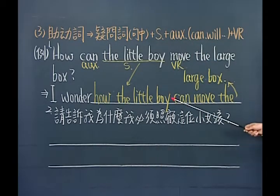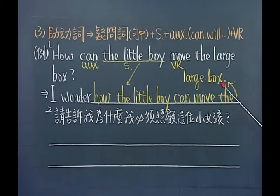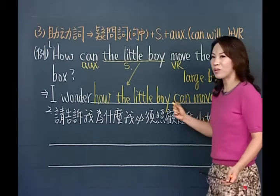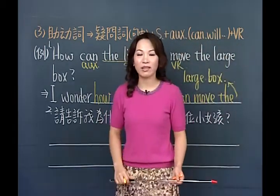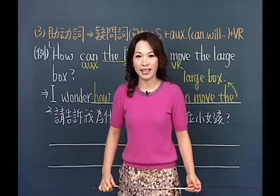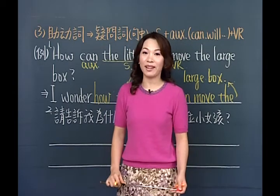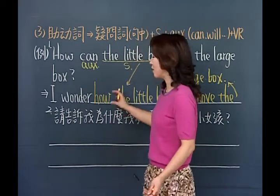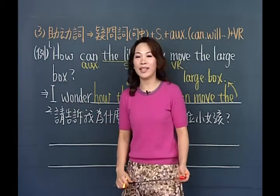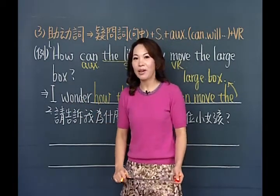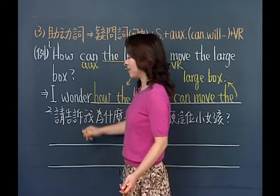有没有？不要忘记疑问词摆句中后面跟的是肯定句的句型，所以你把助动词拿到主词的后面：I wonder how the little boy can move the large box. 句点。我很怀疑（或者是我很想知道）这个小男孩他用什么方法能够搬动这个大箱子。